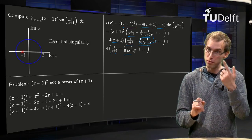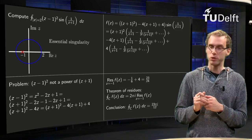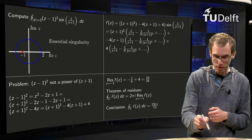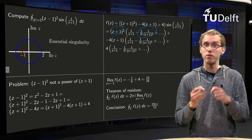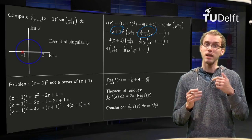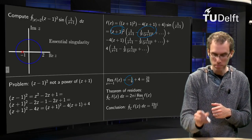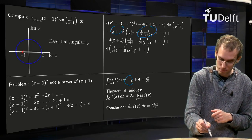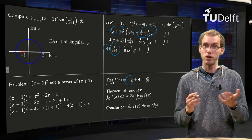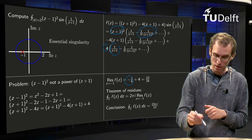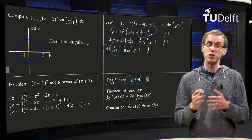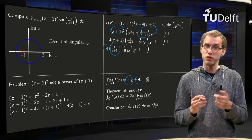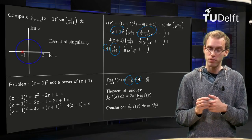We do have contributions from the first and third terms. From the first term: (z+1)² times 1/(z+1)³ gives 1/(z+1), with coefficient -1/3! = -1/6. From the third term: 4 times 1/(z+1) gives a coefficient of +4. So the residue is the sum: 4 + (-1/6) = 24/6 - 1/6 = 23/6... which the calculation gives as 23/24.